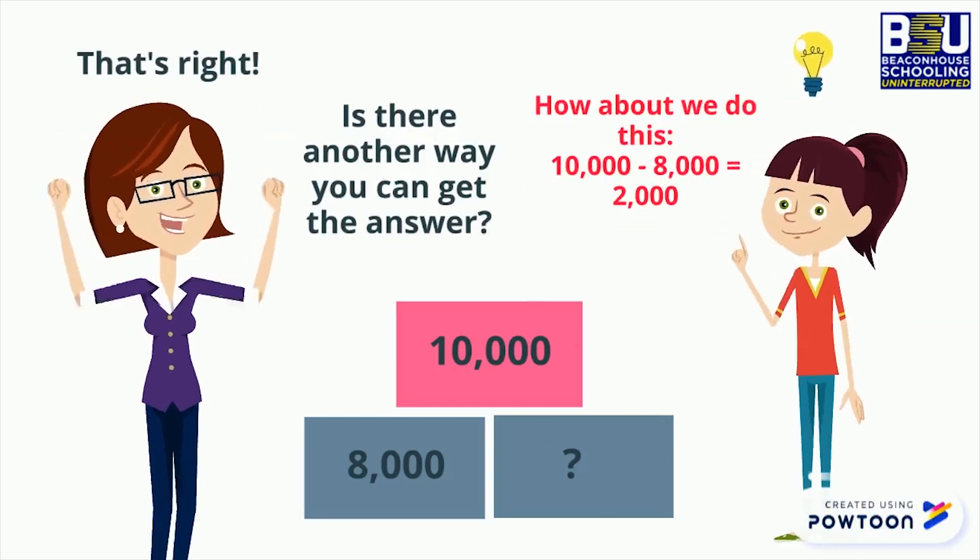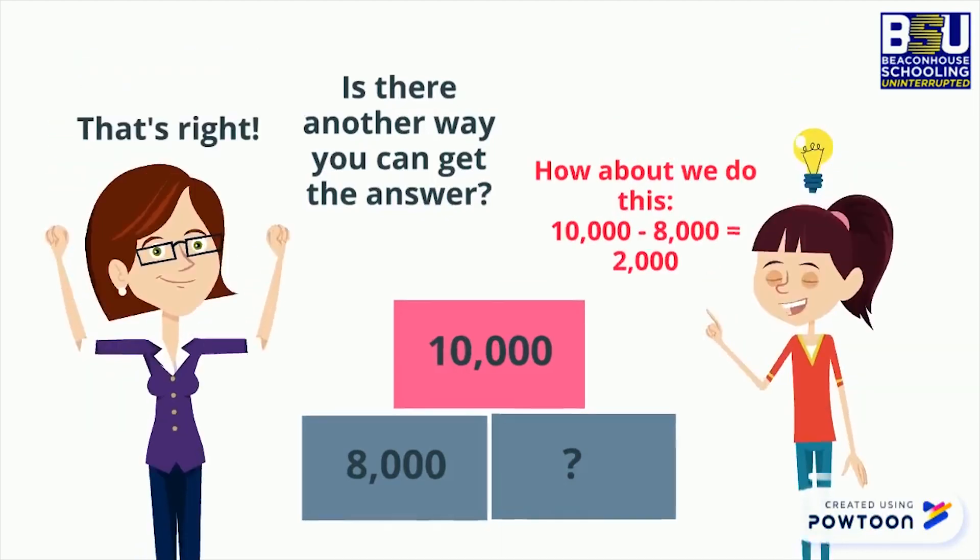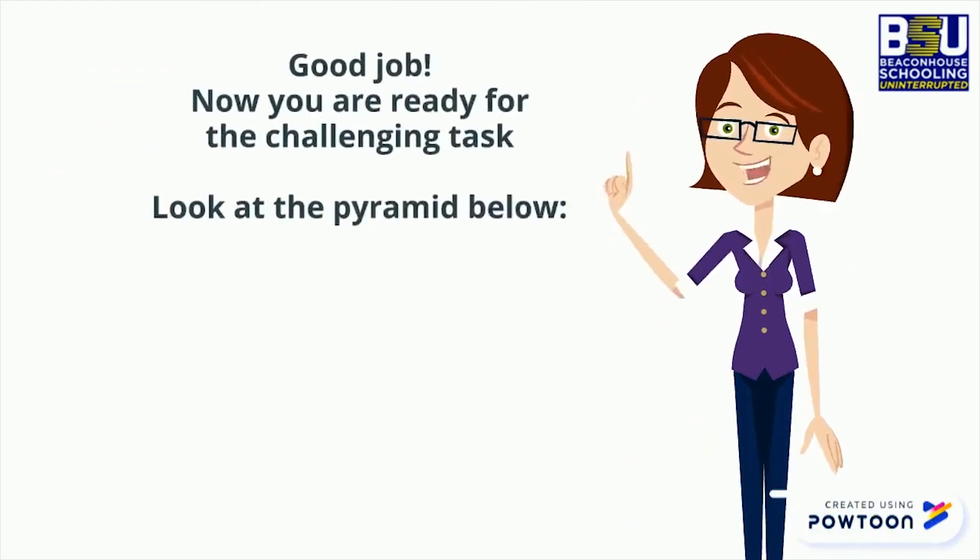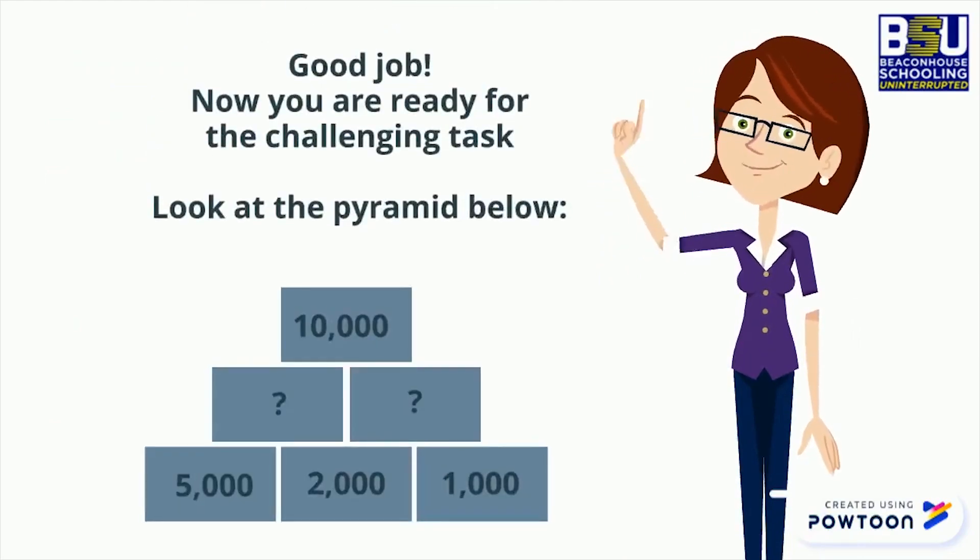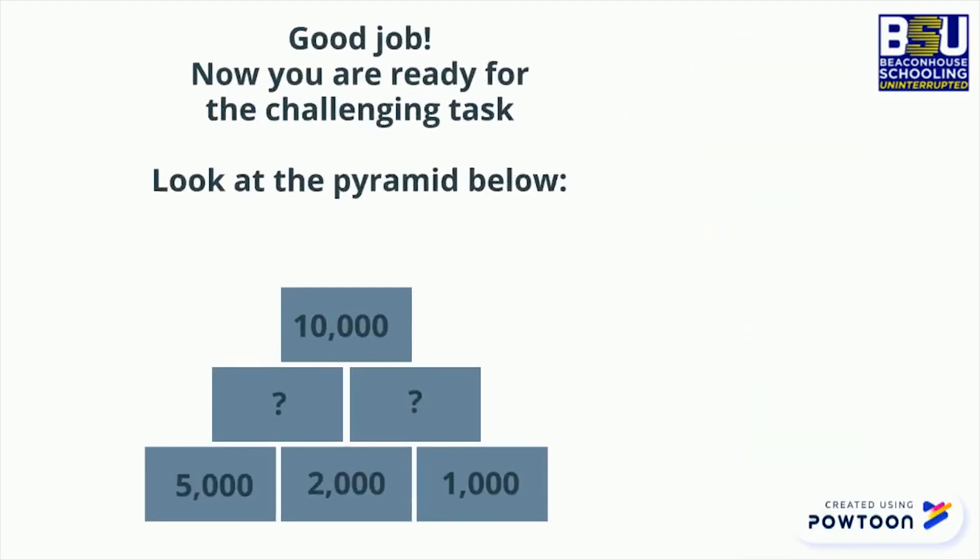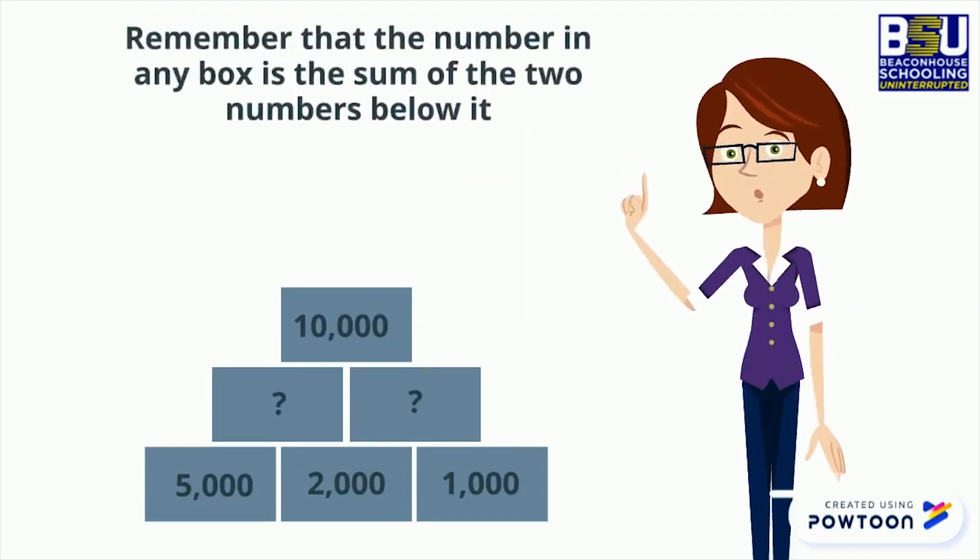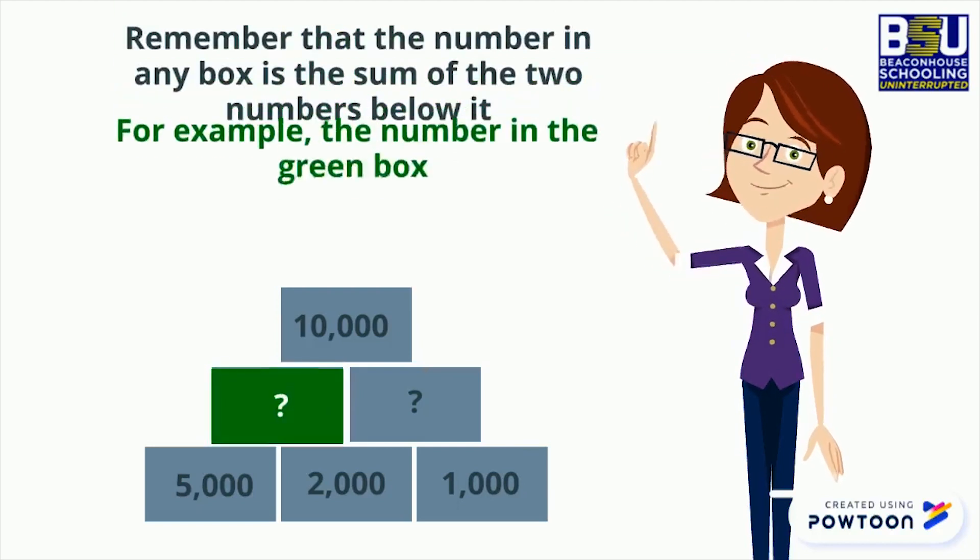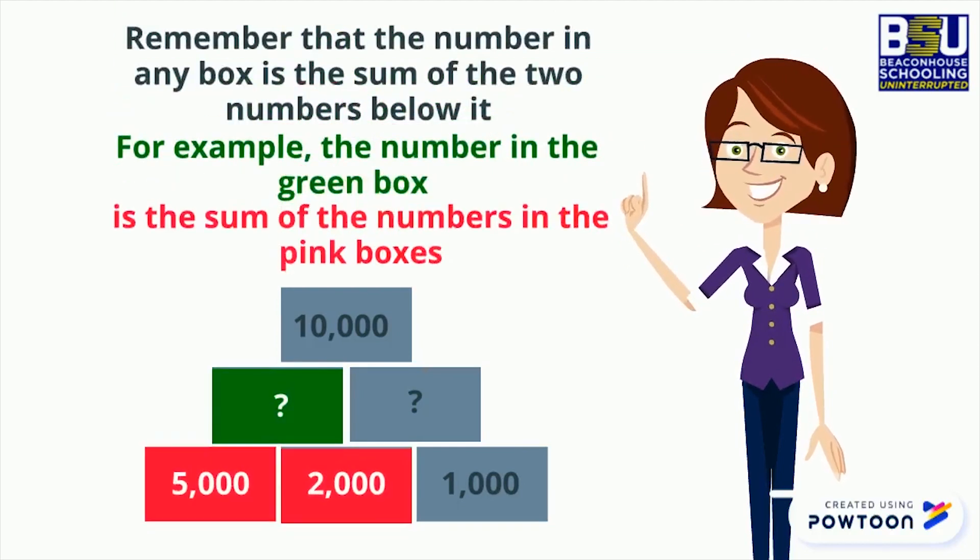Good job. Now you are ready for the challenging task. Look at the pyramid below. Remember that the number in any box is the sum of the two numbers below it. For example, the number in the green box is the sum of the numbers in the boxes below.